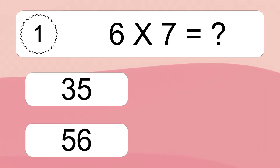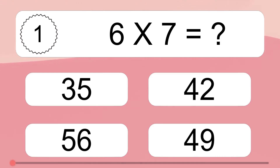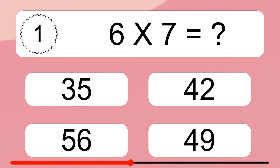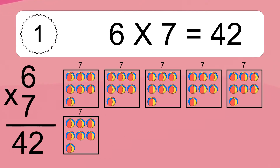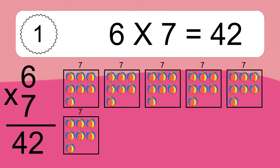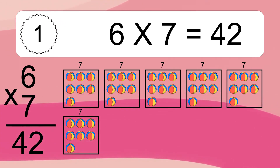Six times seven equals what? Six times seven equals 42. We have six boxes, and each box has seven colorful balls inside. If you count all the balls in all the boxes together, you will have six times seven balls. This equals 42 balls.